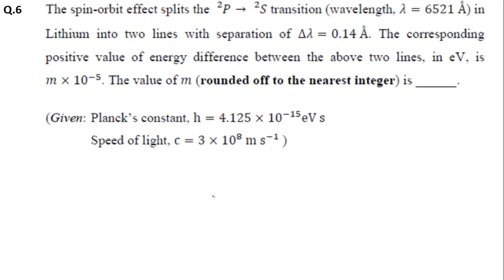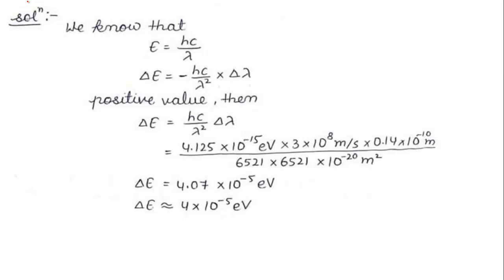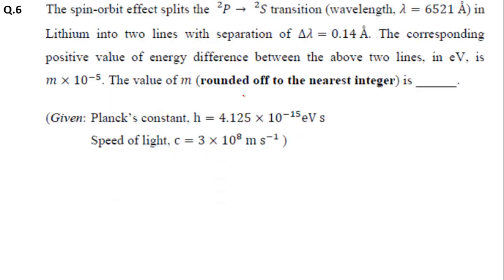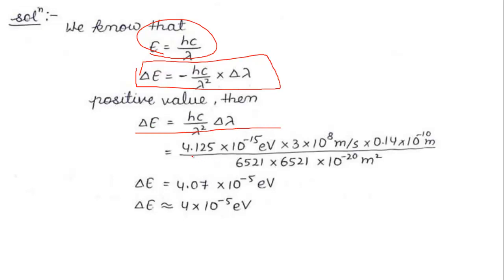The last question from atomic and molecular physics: the spin-orbit effect splits the 2p to 2s transition at wavelength λ = 6521 Å in lithium into two lines with separation Δλ = 0.14 Å. The corresponding positive energy difference between the two lines in electron volts is M×10⁻⁵. Using E = hc/λ, we get ΔE = hc·Δλ / λ². Substituting h, c, Δλ and λ gives ΔE ≈ 4×10⁻⁵ eV.